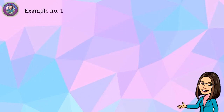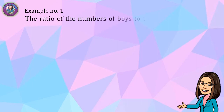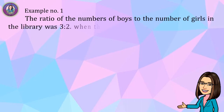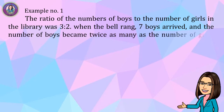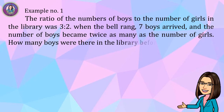Let's have more examples. Example number one: the ratio of the number of boys to the number of girls in the library was 3 to 2. When the bell rang, seven boys arrived and the number of boys became twice as many as the number of girls. How many boys were there in the library before?